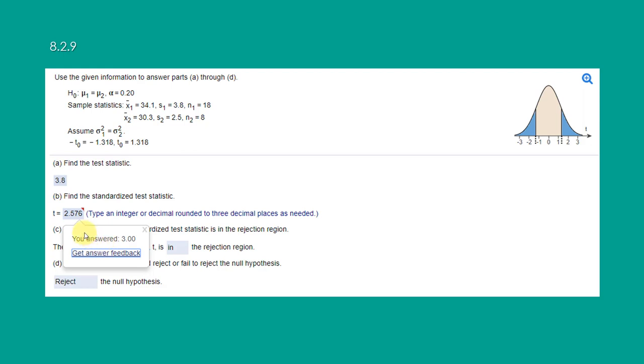Down here in your answer you got the test statistic correct, which is just the difference in the two means. X bar 1 minus X bar 2 is 3.8. The standardized test statistic, you got a 3, and I think that may be because you didn't recognize that this is equal variances instead of unequal variances.